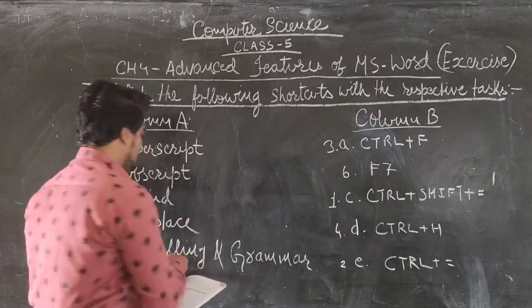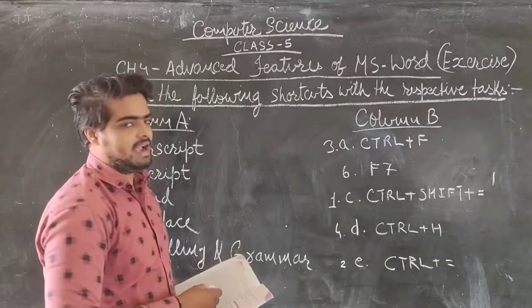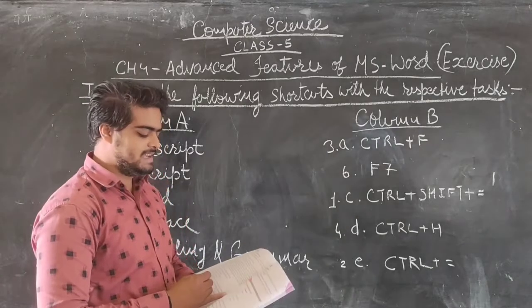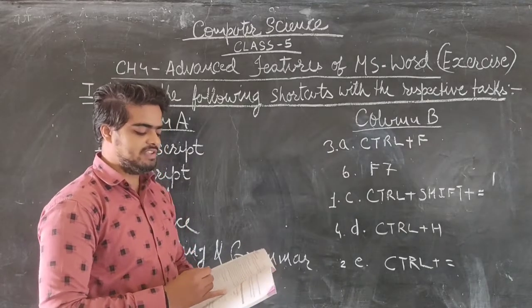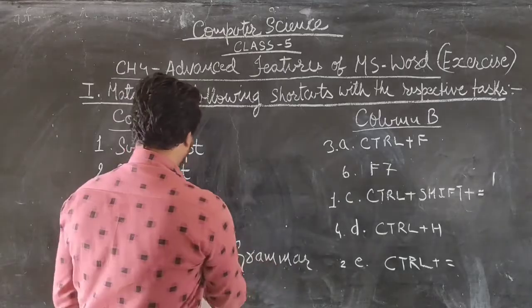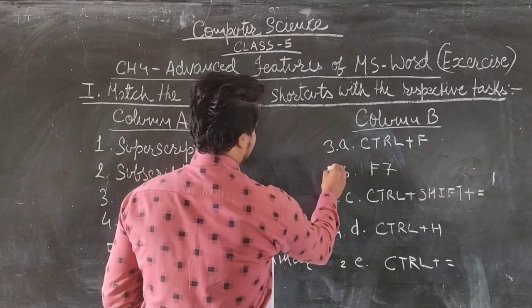Fifth one is Spelling and Grammar, and the shortcut key for Spelling and Grammar is F7, so it will match with B.